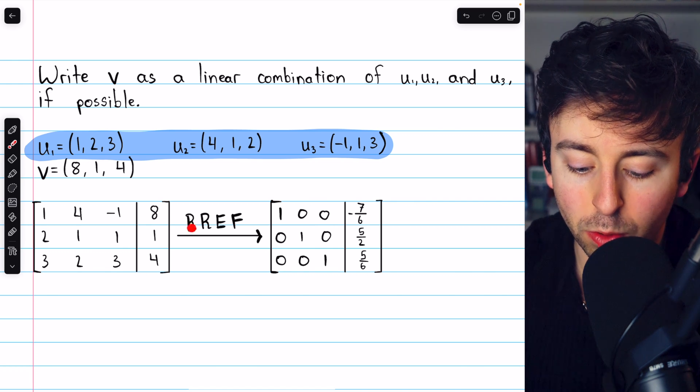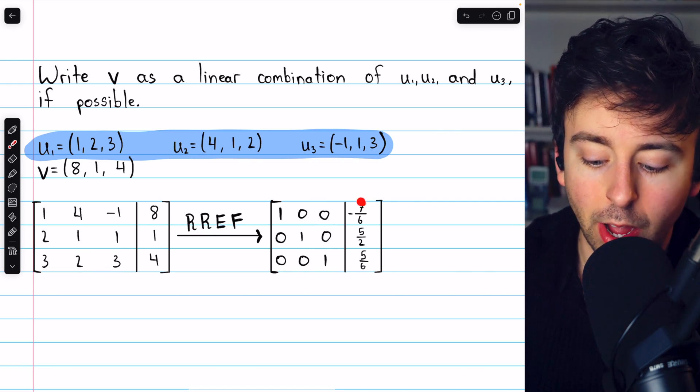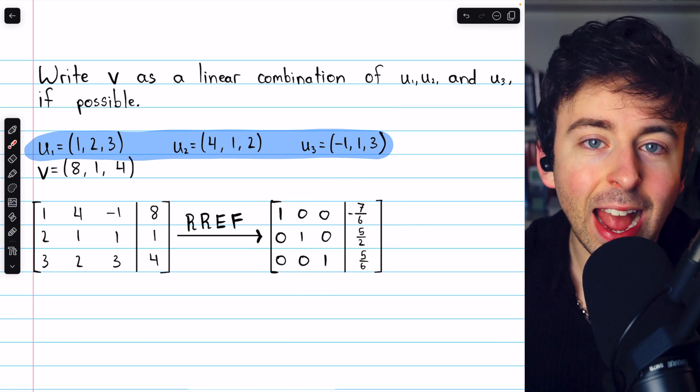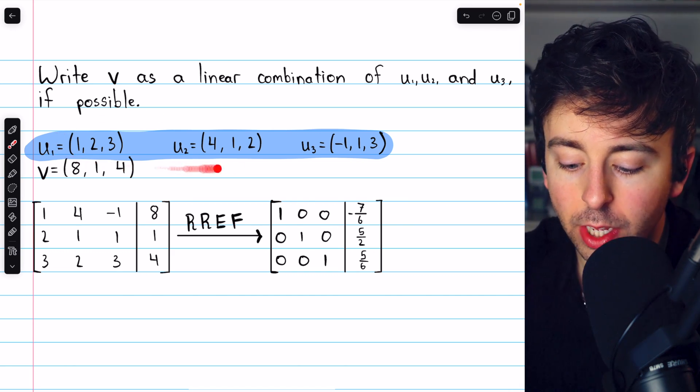We can then get this into reduced row echelon form by performing Gauss-Jordan elimination. You can verify that we'll arrive at this matrix. This matrix tells us exactly how we will express v as a linear combination of the other vectors.